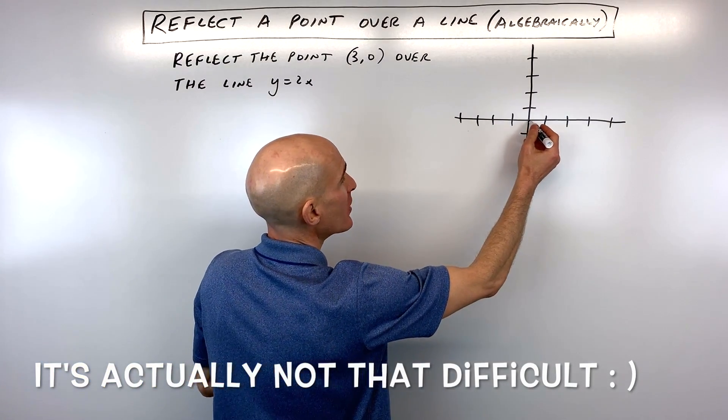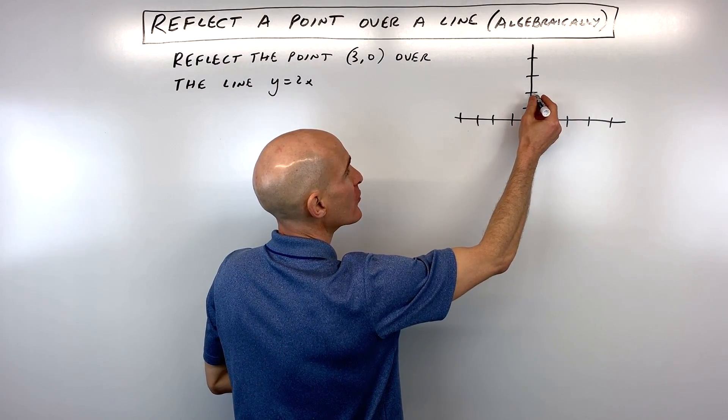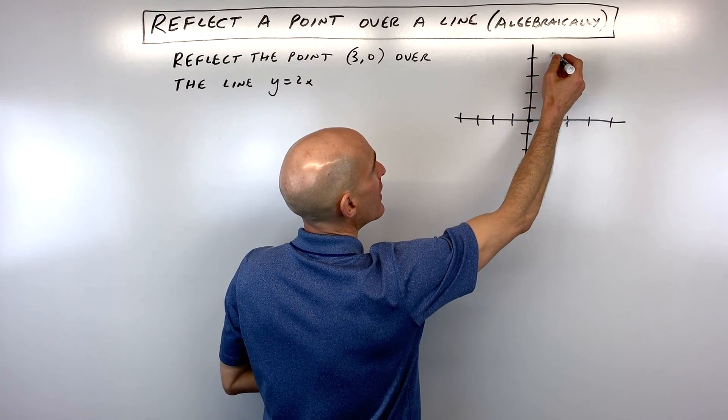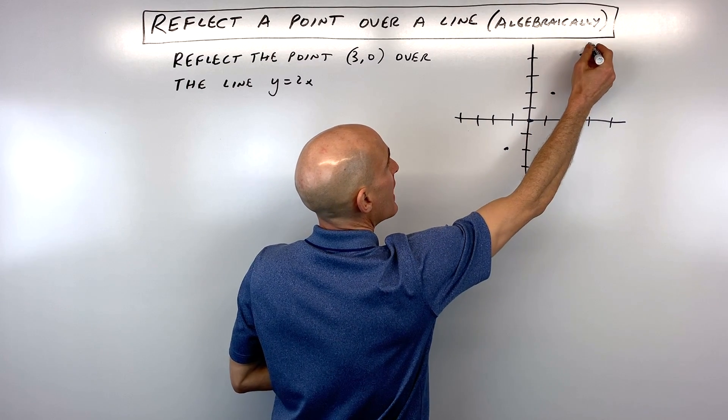So the first thing is, let's go ahead and graph the line y equals 2x. So you're going to rise 2, run 1. The y-intercept is 0. Now rise 2, run 1, and this is our line.